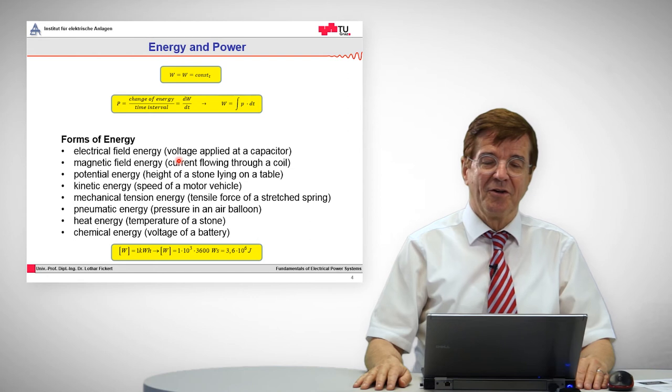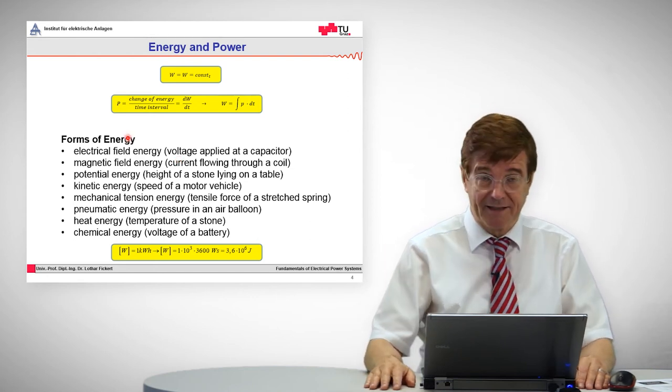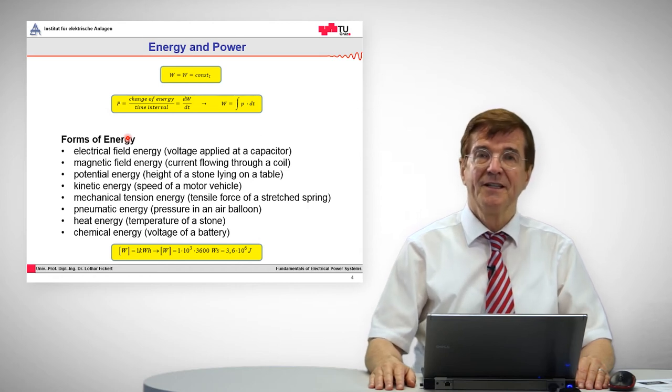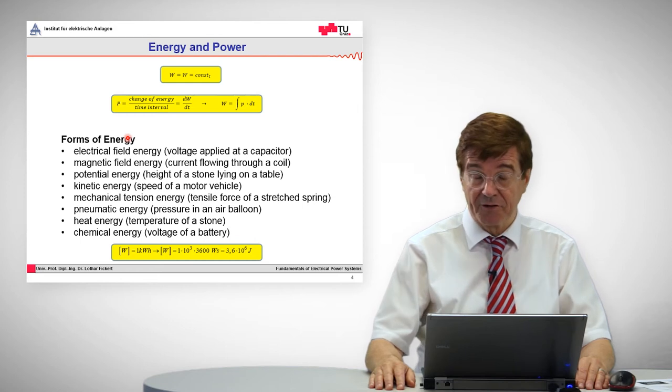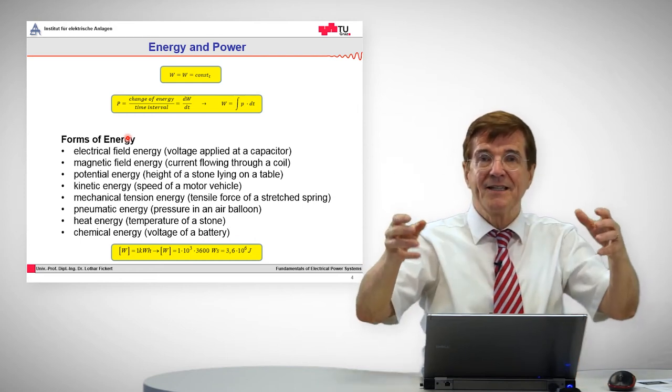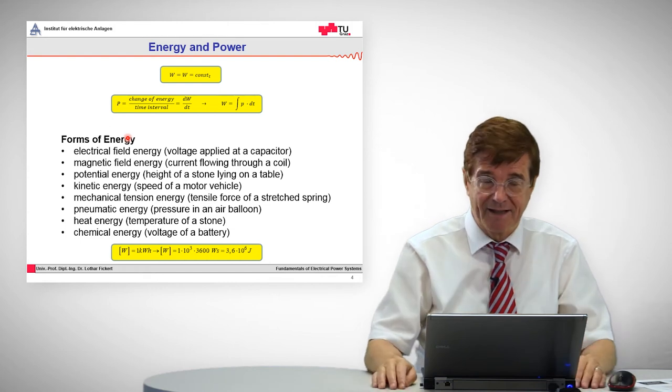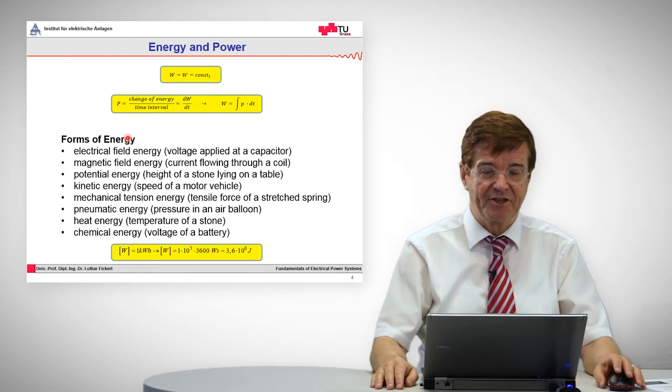Another form of energy which is important in an electrical power system is magnetic energy. The magnetic field energy comes when there is a flow of current through a line, for example a wire line. Then the space around this line is filled with magnetic field, and this magnetic field constitutes a magnetic energy.